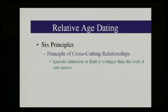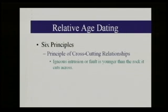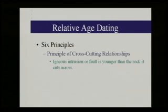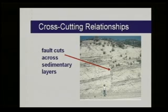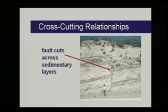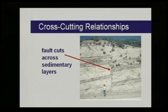Cross-cutting relationships: this principle notes that if we have an igneous intrusion or a fault that cuts across existing rock layers, that intrusion or fault has to be younger than the rock layers it cuts across. That makes sense because the rock layers are already in place before the intrusion cuts across them or the fault breaks them. A photograph of a fault cutting across sedimentary layers confirms that faulting occurred after the rock layers were deposited and lithified — faulting is the younger event.